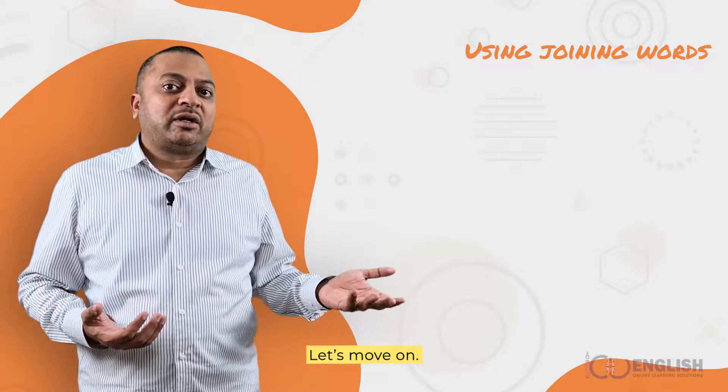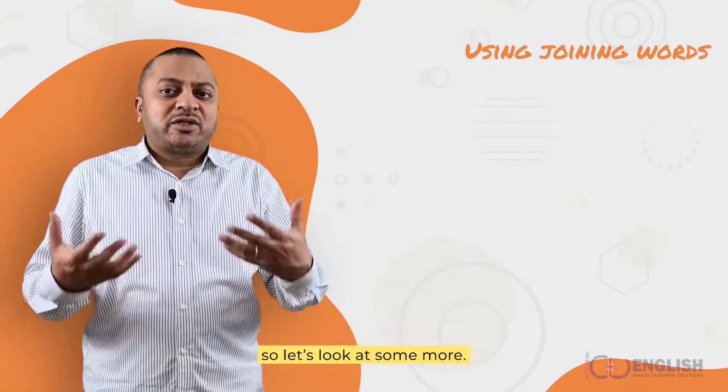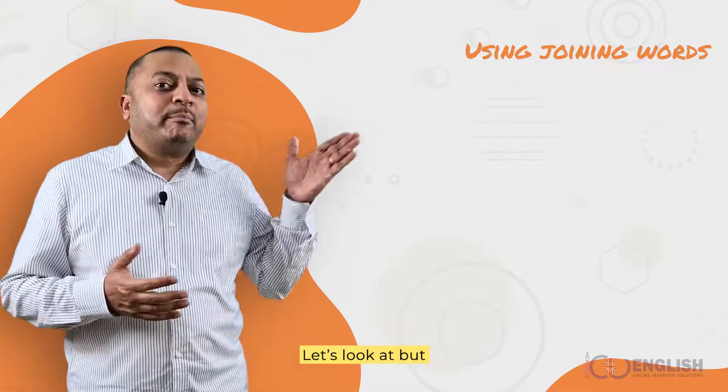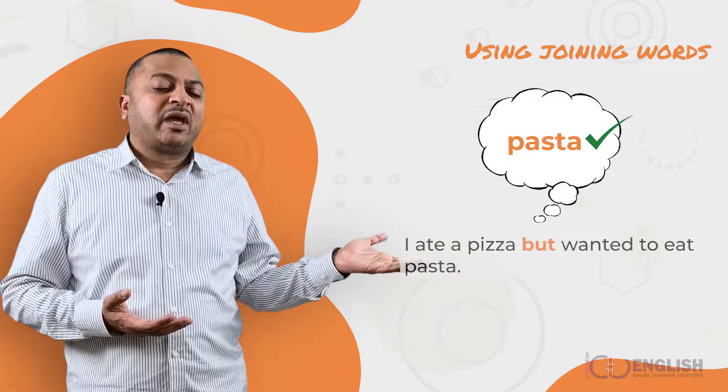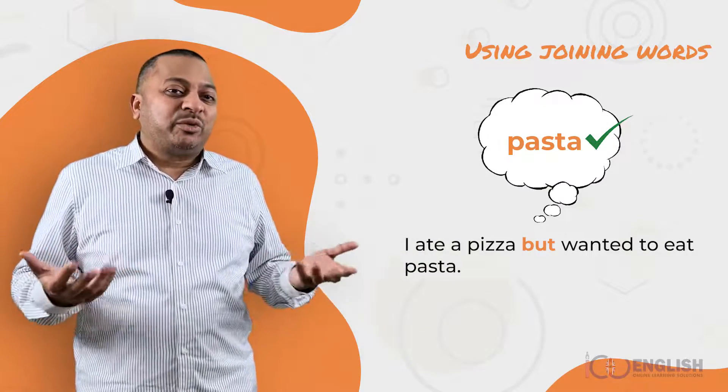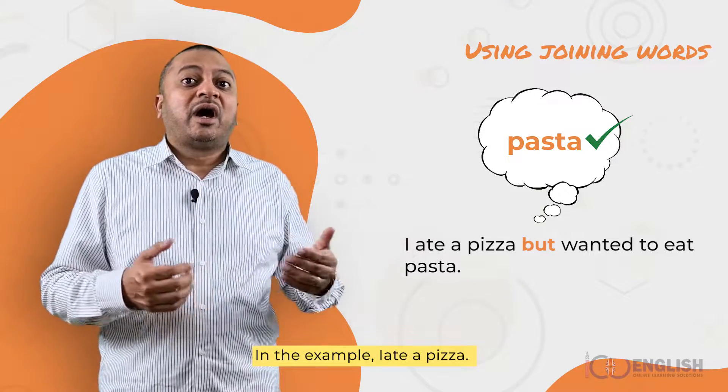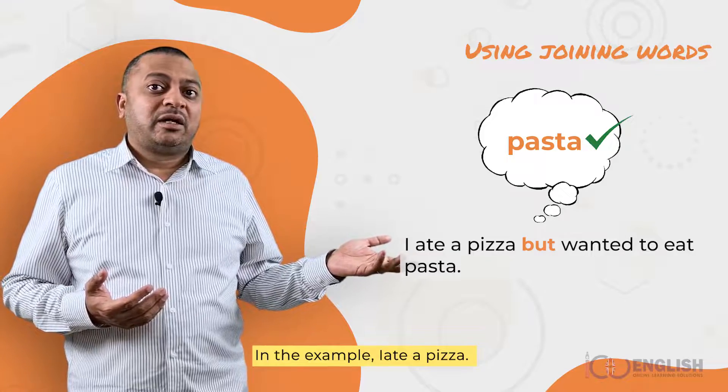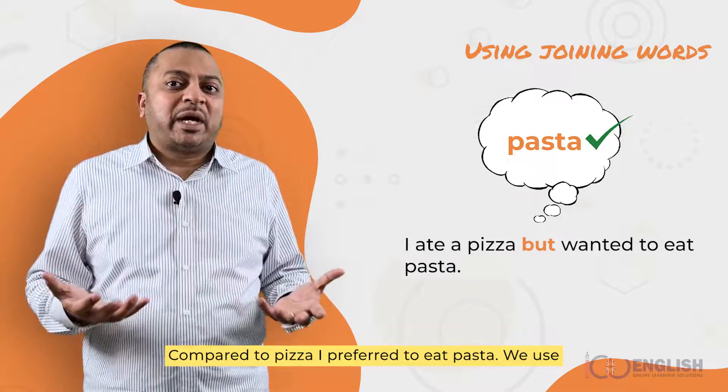There are other joining words, so let's look at some more. Let's look at but. Here is an example. I ate a pizza but wanted to eat pasta. In the example, I ate a pizza. Compared to pizza, I preferred to eat pasta.